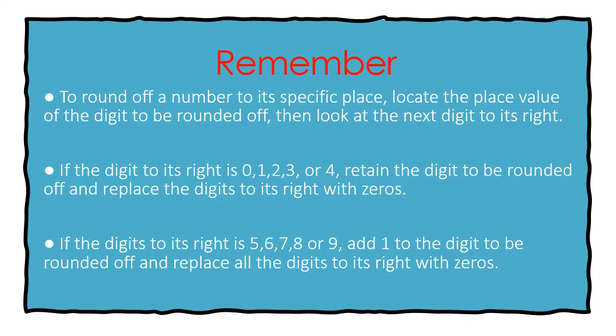I want you to remember the following. To round off a number to its specific place, locate the place value of the digit to be rounded off. Then look at the next digit to its right. If the digit to its right is 0, 1, 2, 3, or 4, retain the digit to be rounded off and replace the digits to its right with zeros.